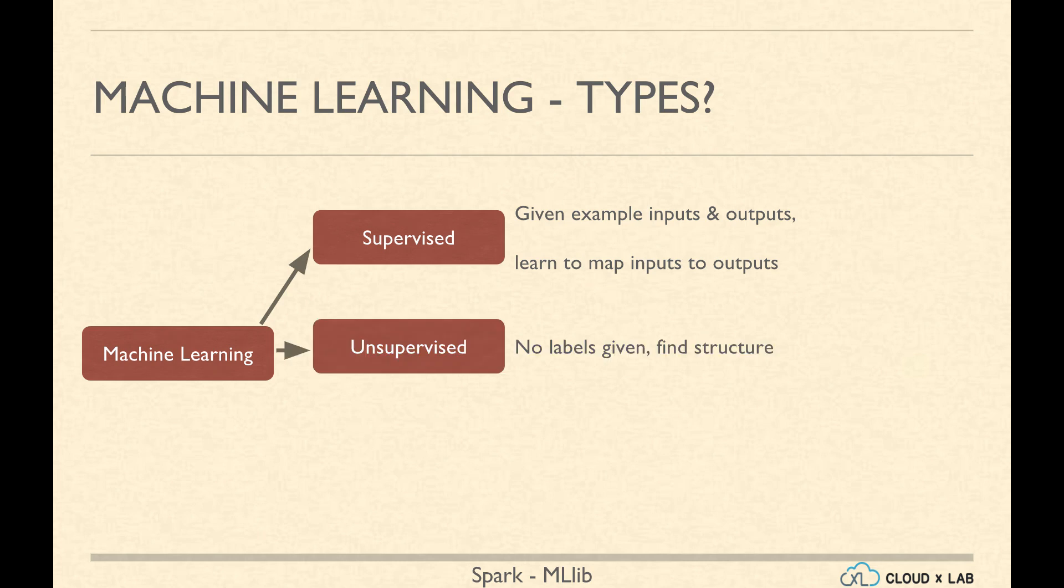When we do not have mappings of input to expected output, we call it unsupervised machine learning. In unsupervised machine learning, we are not provided with the labels of data. Instead, we are supposed to find the structure in the given data.